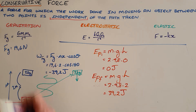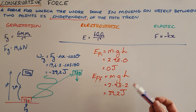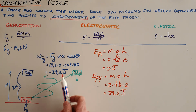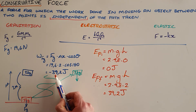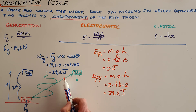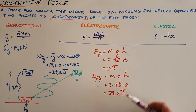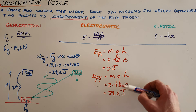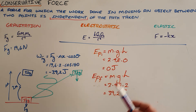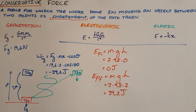This is why we call it a conservative force: when work is done by the force of gravity, the energy that appears to be lost is actually converted into another form and can still be used later. A conservative force is one where work done against that force is always converted into another form of energy.